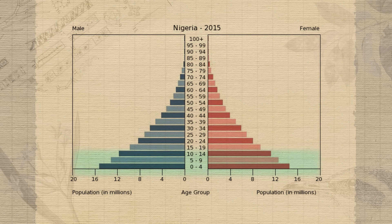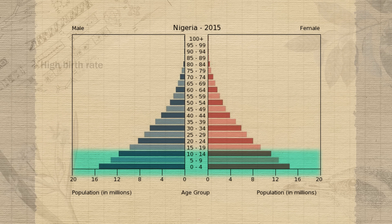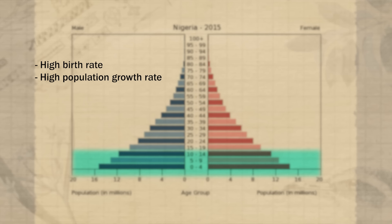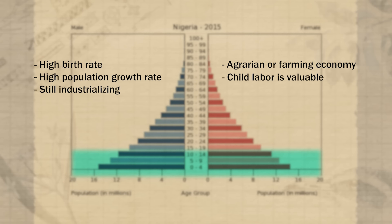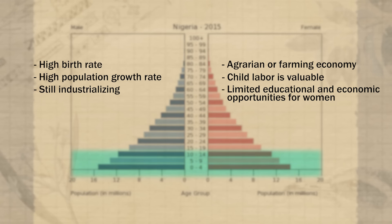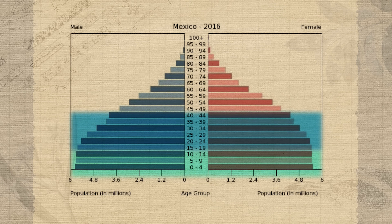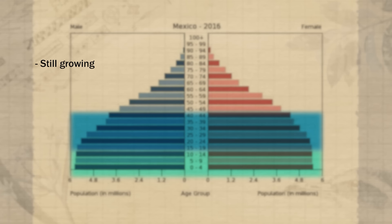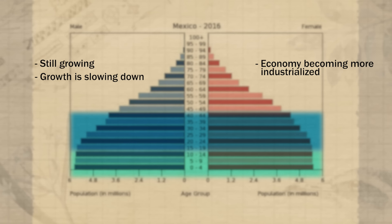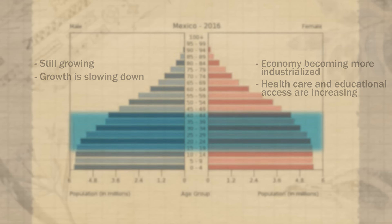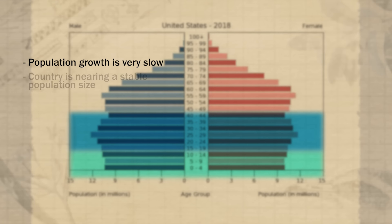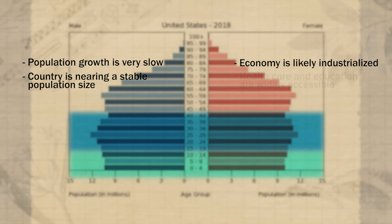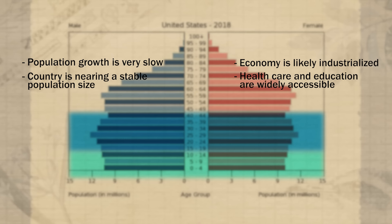If the pre-reproductive age cohort is significantly larger than the other age cohorts, it tells you the country has a really high birth rate, a high growth rate, and is probably still industrializing — with an agrarian economy where child labor is valuable and limited educational and economic opportunities for women. If the pre-reproductive portion is just a little bit larger than the reproductive cohort, the country is still growing but the growth rate is slowing as the economy becomes more industrialized and healthcare and educational access increase. As pre-reproductive and reproductive age cohorts become equal, population growth is very slow and the country is nearing a stable population size.